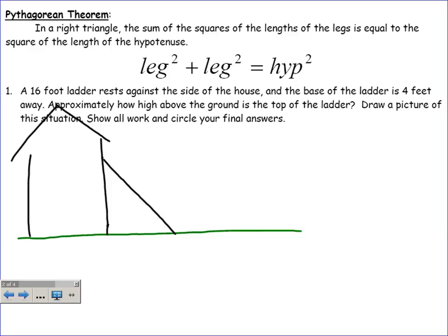So it looks something like this. We have some house, we have some ladder that's leaning up against it. The ladder is 16 feet. The base of the ladder is 4 feet away from the house. Most houses are going to be perpendicular to the ground, so we are dealing with a right triangle. We're trying to figure out the height - how high does this ladder go? I'm going to label it as h.